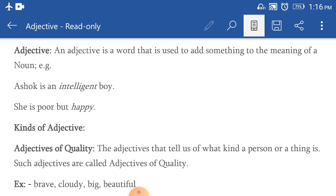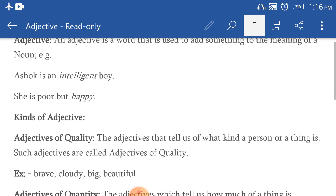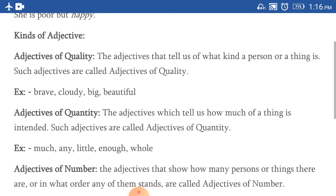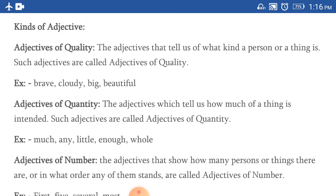Now there are certain kinds of adjectives. First is adjectives of quality. The adjectives that tell us of what kind a person or thing is. Such adjectives are called adjectives of quality. Jessa ki naam batata hai, ye adjectives woh adjectives hoote hai jo ki noun ki quality ke baare me batata hai. Examples: brave, cloudy, big, beautiful.